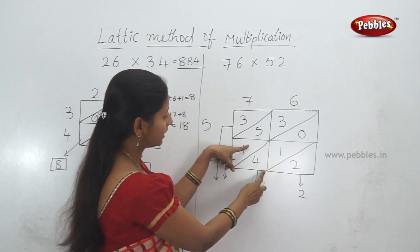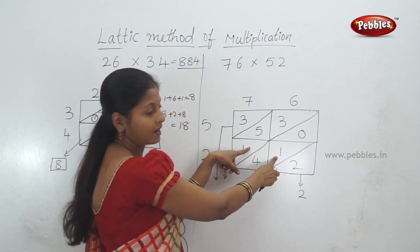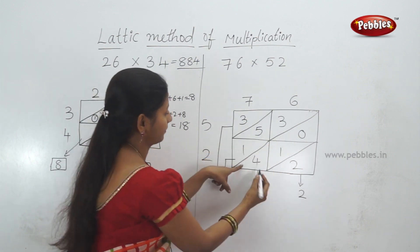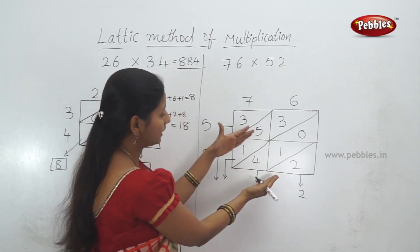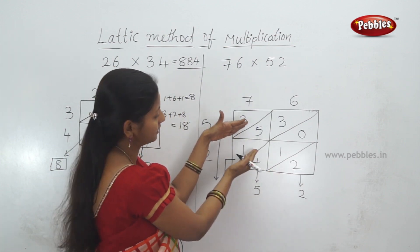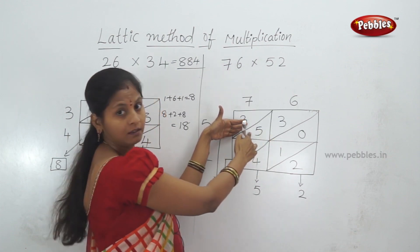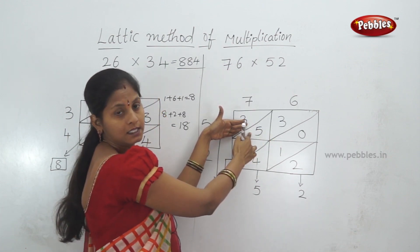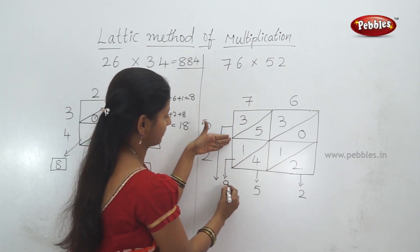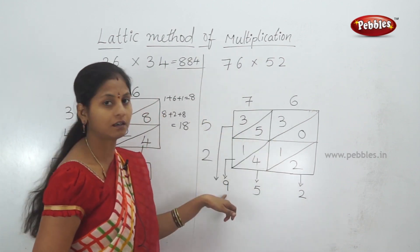Now add the digits between the slanting lines. 4 plus 1 plus 0 equals 5, then 5 plus 0 equals 5. Next slanting line: 1 plus 5 plus 3 equals 9. 1 plus 5 is 6, 6 plus 3 is 9. So we write 9.